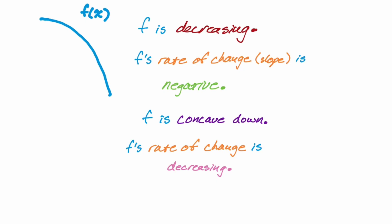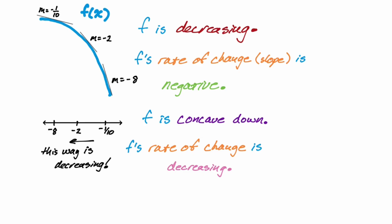Let's put some line segments on here — this is something you can do anytime you're confused: throw some line segments on, estimate some slopes, put them on a number line, and see if you're increasing or decreasing. Here we get negative one-tenth, then negative two, then negative eight. If you go from negative one-tenth to negative two to negative eight, you're going to the left on a number line, which means you are decreasing. So those are the four cases: increasing concave up, increasing concave down, decreasing concave up, and decreasing concave down. The ones I didn't cover are linear functions, which have zero concavity. Anyway, I hope this was helpful — good luck.